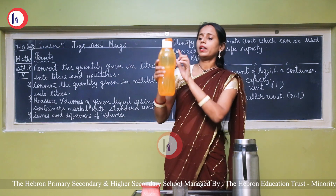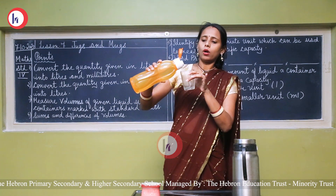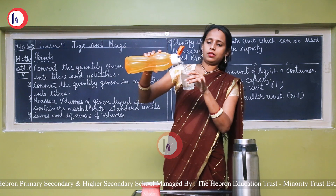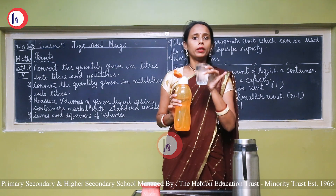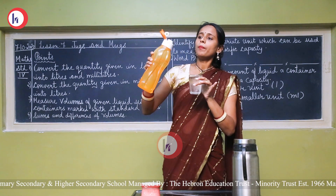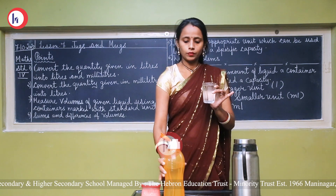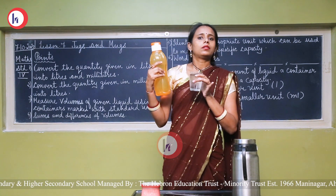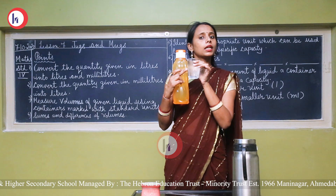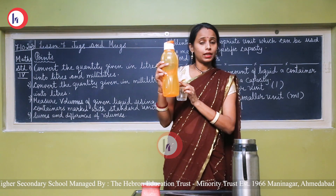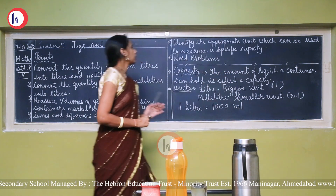See, this is a bottle and there is water in it. Now if I pour the water into this glass, what will happen? It will be filled. Then if I pour again, it will overflow. So what is the conclusion of this activity? The water in this bottle is more than the water in this glass, which means the capacity of this bottle is more than this glass.